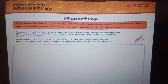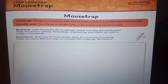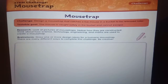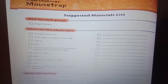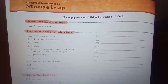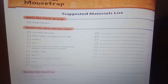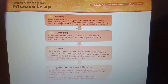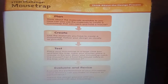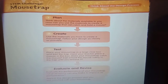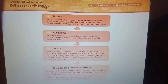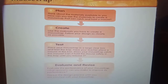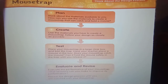List your materials. The materials are also given in the textbook. In the planning step, think about the materials available to you and how you can use them to create the mousetrap. Then draw your design. After that, test the mousetrap.